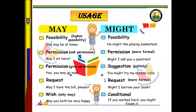Look at examples: She may be at home. You might like playing basketball. May I sit here? May I ask you a question? Yes, you may go now. You might try my cheesecake. May I have the bill, please? Might I borrow your book? May you both be very happy. If you work hard you might finish it. Please read it carefully and analyze the situations using might and may.